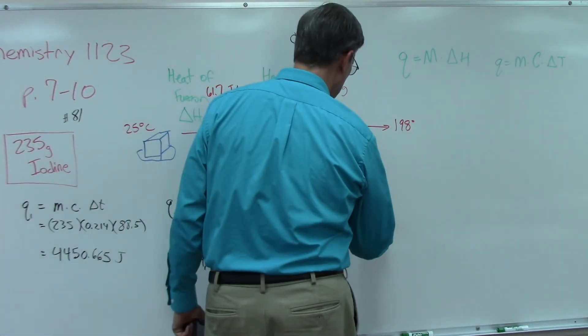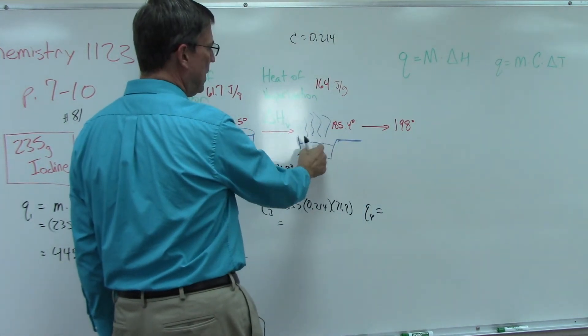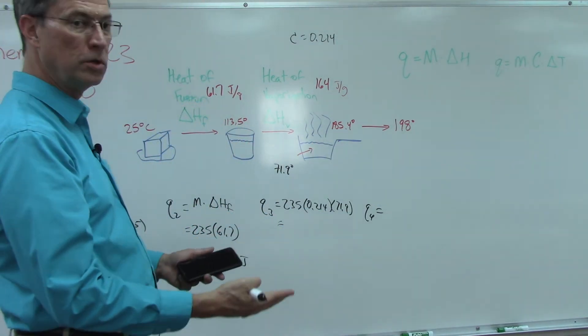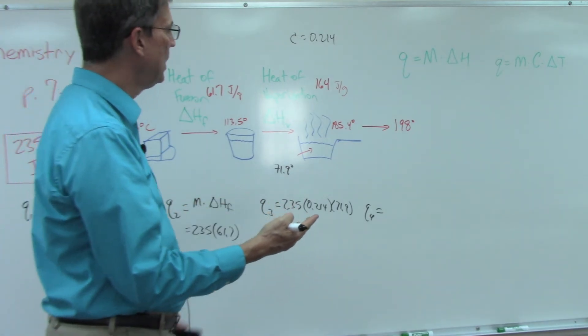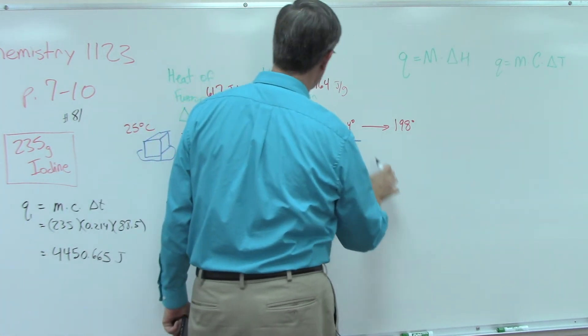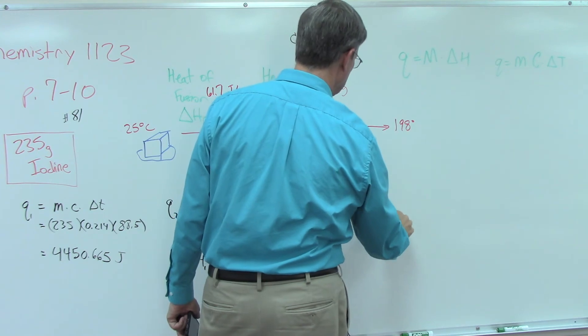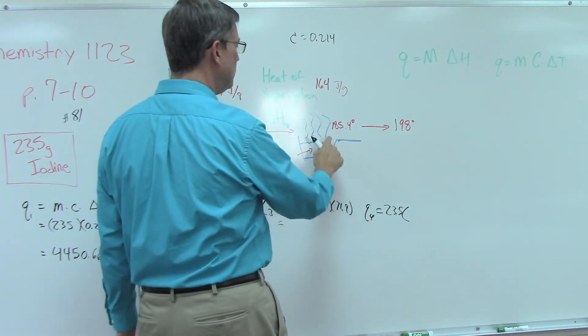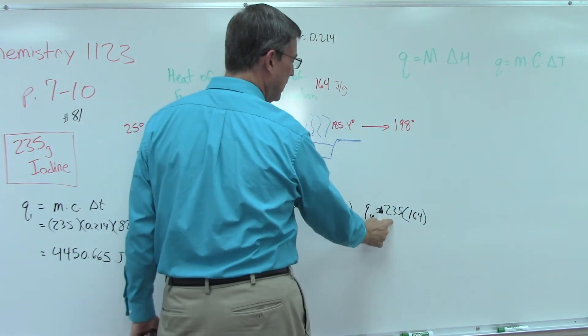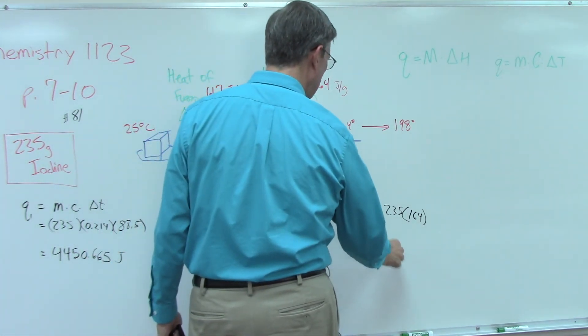Now let's figure out Q4. Q4 is we're at 185.4 and it stays stuck at that temperature until all of the liquid has turned to vapor, to steam. The heat of vaporization is 164, so we take the mass times delta H: 235 times 164. This is grams, this is joules per gram, so the grams will cancel out and you'll get the answer in joules.